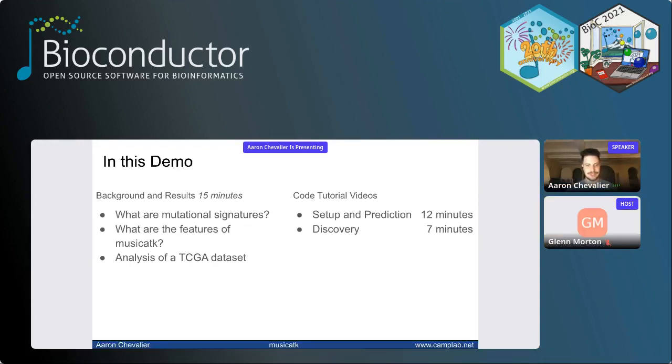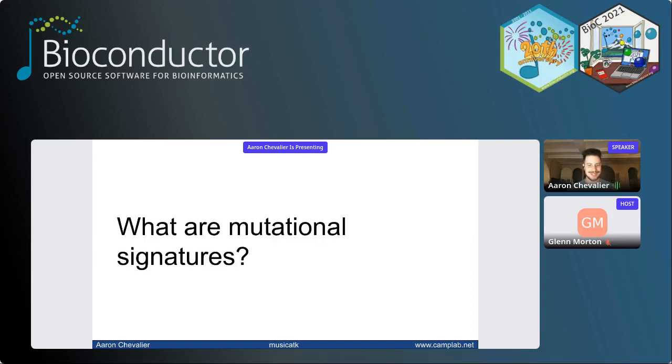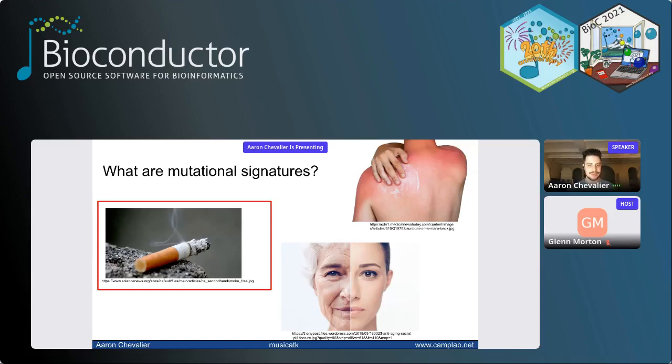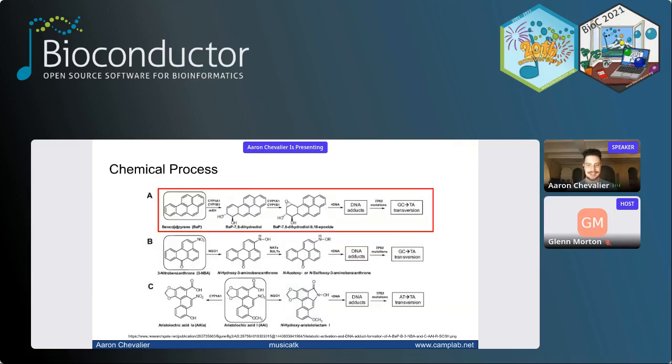So a quick background on mutational signatures, features of Musica TK. I'm going to show a real dataset analysis. And then there's two tutorial videos, one that shows some basic setup for loading and processing samples, and then prediction from existing signatures. And then another shorter demo that shows discovery and analysis of novel signatures. So just briefly, what are mutational signatures? So a lot of people do work looking at different mutations in the genome and their effects on cells. We're looking at the opposite. We're looking at where these mutations come from. So if you go outside in the sun and get burned by ultraviolet rays, or if you smoke cigarettes or just endogenous processes, such as aging, add mutations to the genome.